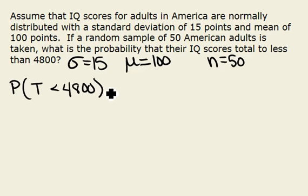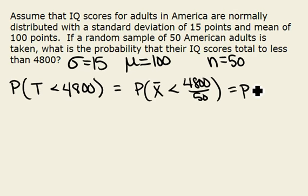We can convert the total into an average. We have a total of 4800 for 50 people, so this would be the probability that their mean or average, X bar, would be less than 4800 over 50. And so this gives us the probability that the average is less than 96.